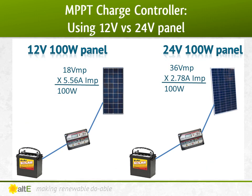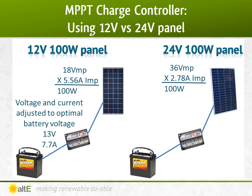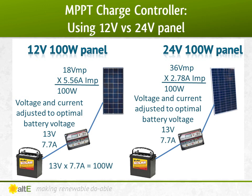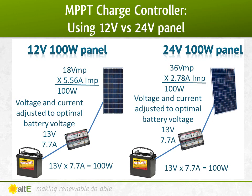Now let's do that with an MPPT charge controller. The 18 volts is dropped down to 13 volts at a ratio of 1.38 — 18 volts divided by 13 equals 1.38 — increasing the current by 1.38 as well, raising it to 7.7 amps. 13 volts times 7.7 amps equals 100 watts. The 24-volt panel's 36 volts is dropped down to 13 volts with a ratio of 2.7 — 36 volts divided by 13 volts equals 2.7 — so the current is raised by 2.7 to 7.7 amps. That's the same voltage and current output as the 12-volt panel. So we're able to use all 100 watts of the 24-volt panel in the 12-volt battery bank, getting all the power available.